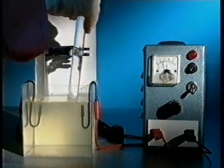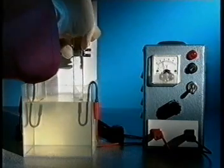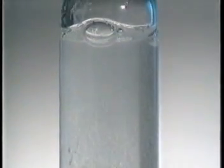To collect the gases, a test tube full of sodium chloride solution is placed over each electrode. Gas displaces the solution and collects in the top of the tube.